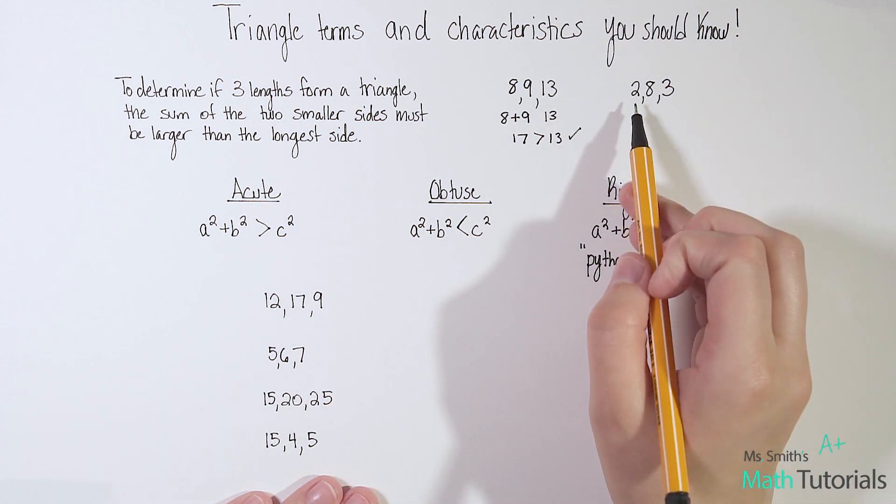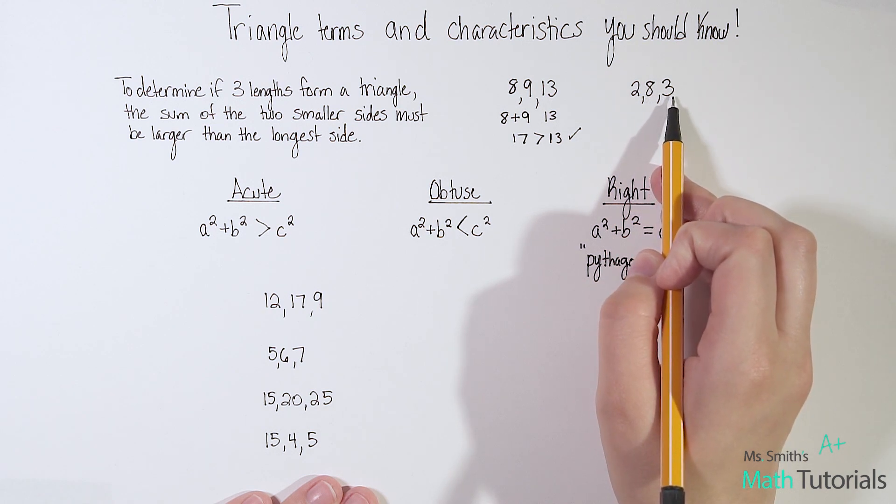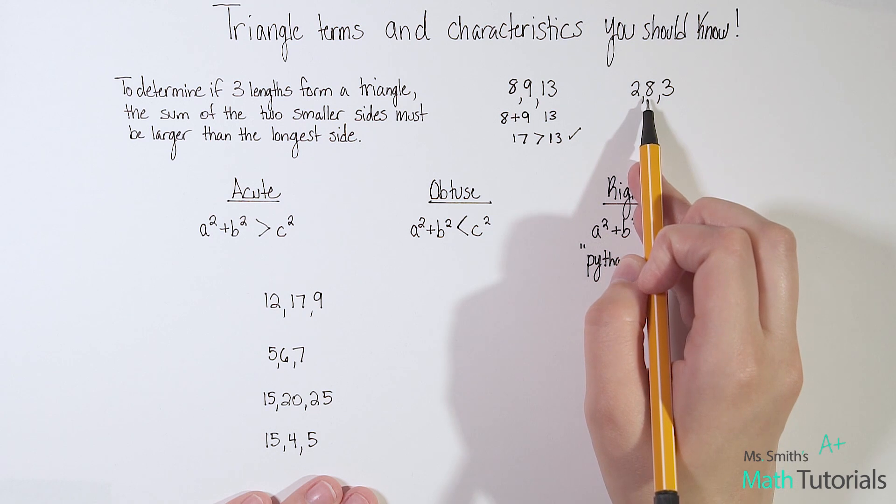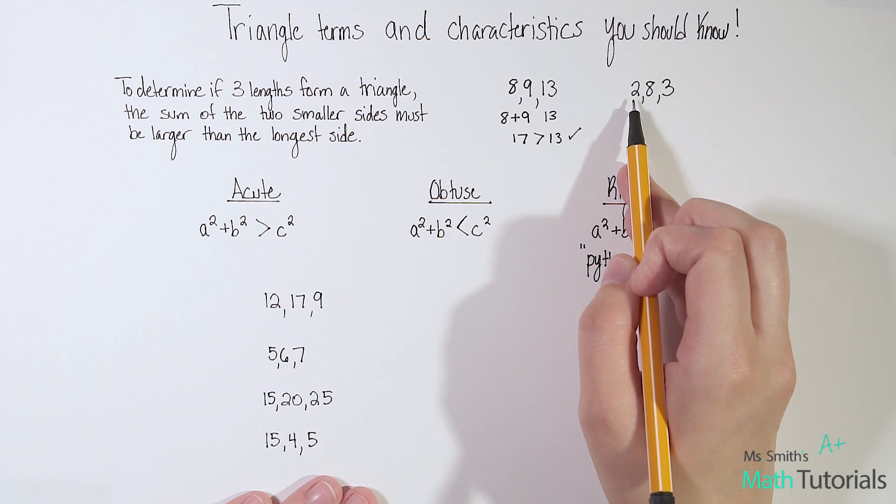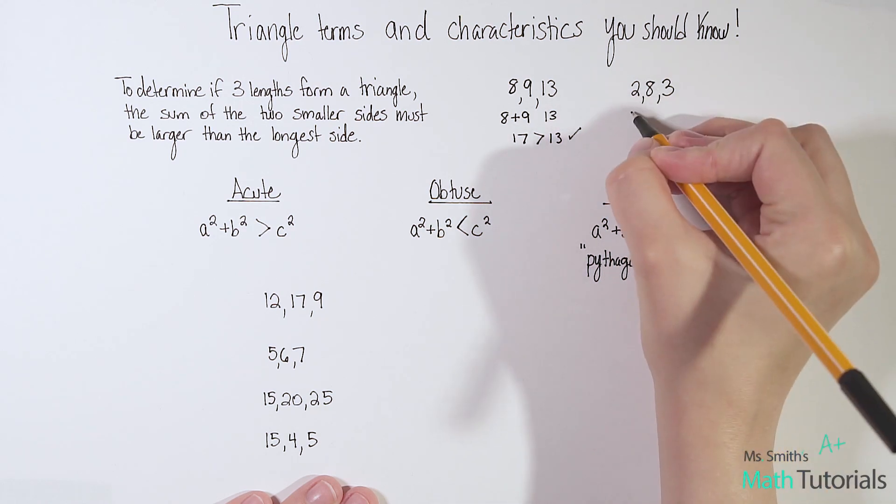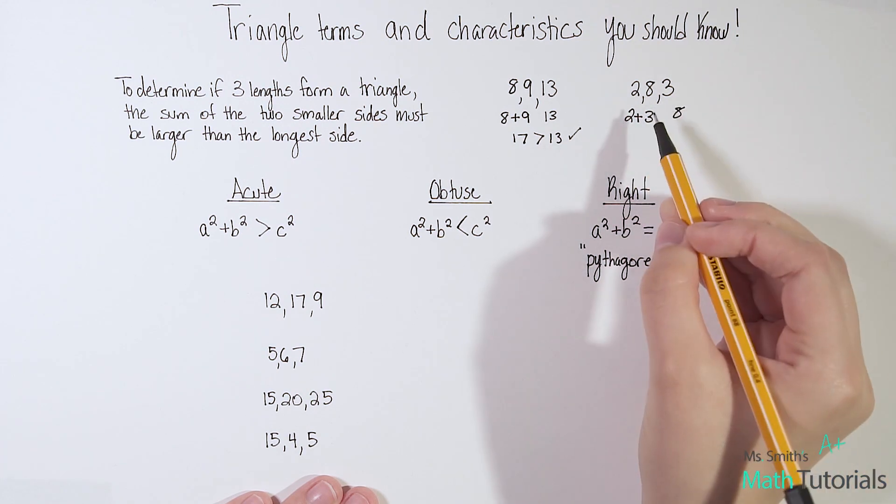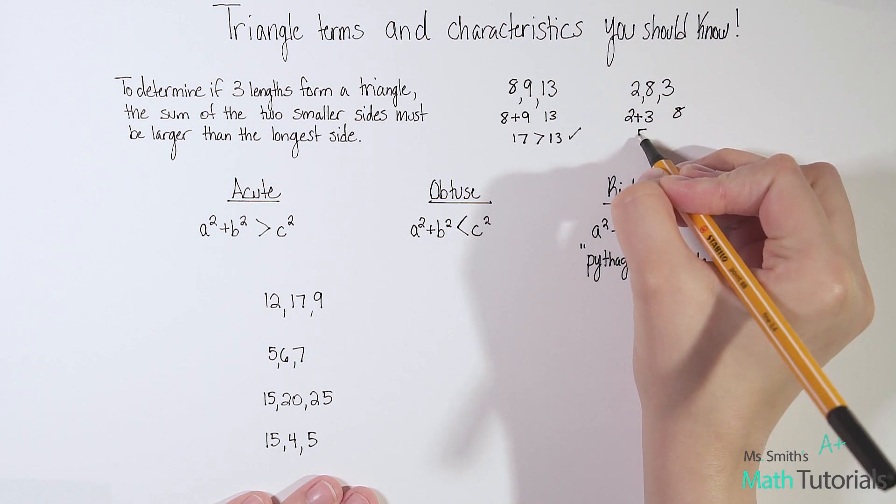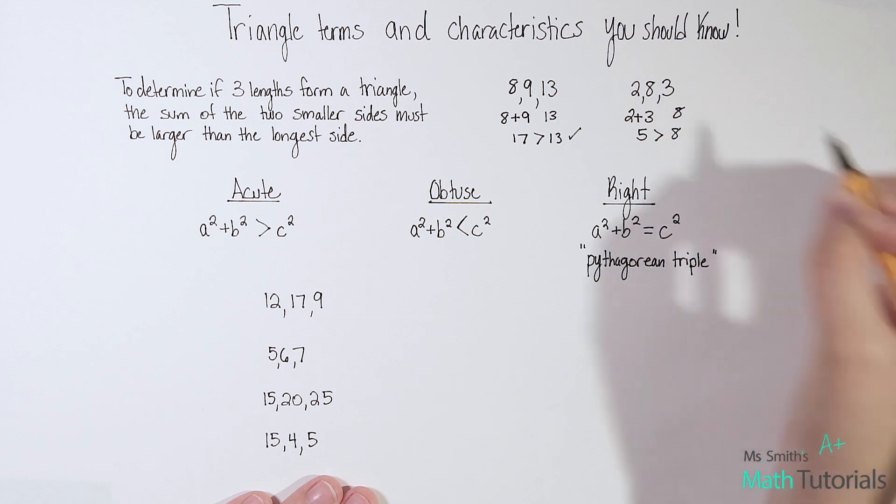Okay let's try this one. So I take my two smallest sides. I've got 2, 8, and 3. So my two smallest sides are 2 and 3. Probably the biggest student error I see is they just go in order. They just pick the first two and then compare it to the third. And that's not accurate. You want to pick the lowest two. So 2 plus 3. And let's compare that to 8. Well I know 2 plus 3 is 5. And is 5 greater than 8? We know that's not true. 8 is actually bigger than 5.